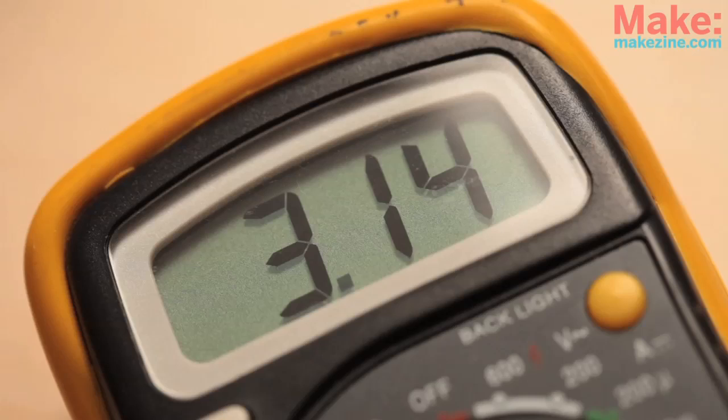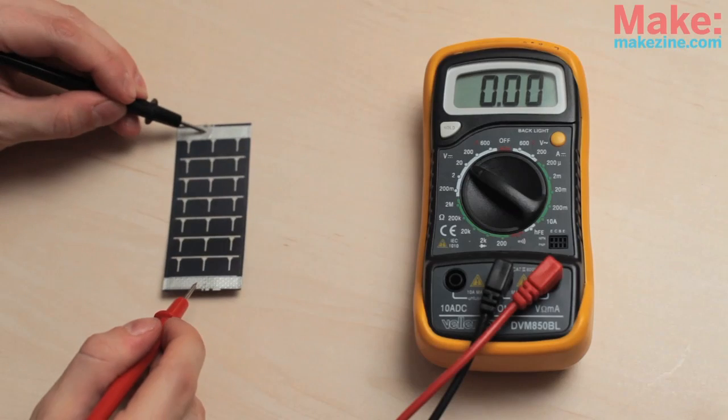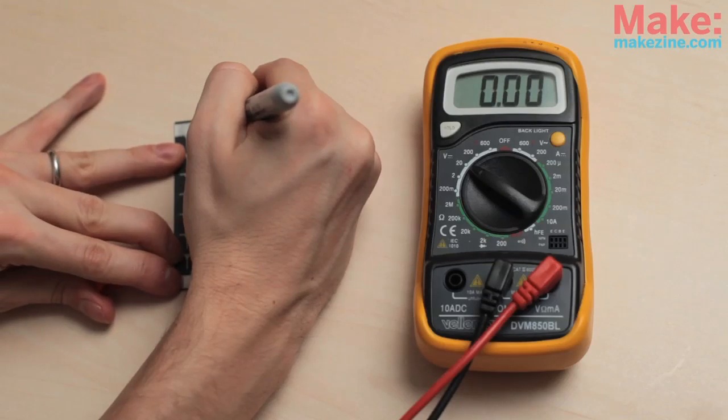If your meter reads a positive voltage, then the red lead is connected to the positive terminal of the solar cell. If your meter reads a negative number, then you know the solar cell's positive terminal is connected to the black probe. I'm going to mark those off.